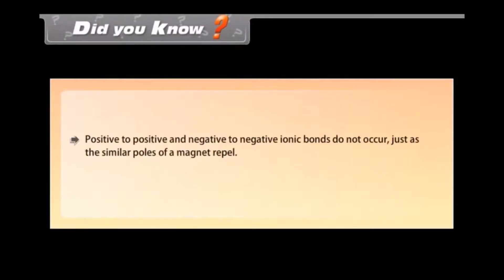Did you know? Positive to positive and negative to negative ionic bonds do not occur, just as the similar poles of a magnet repel.